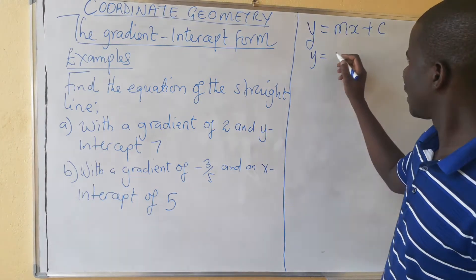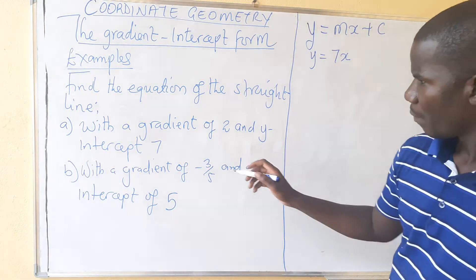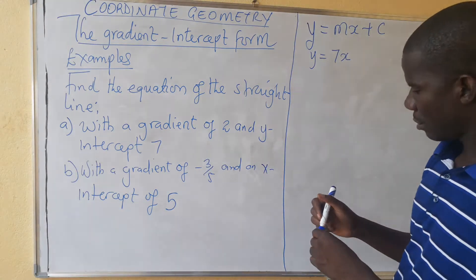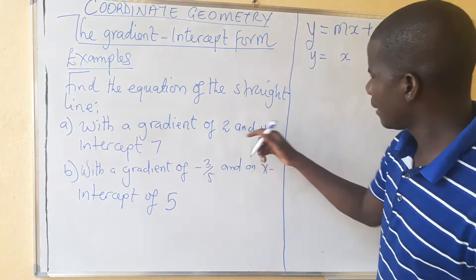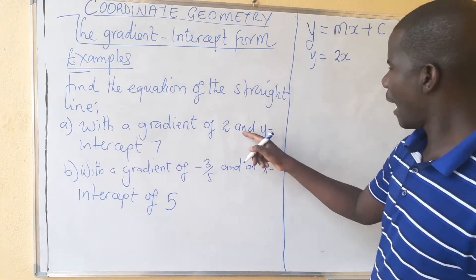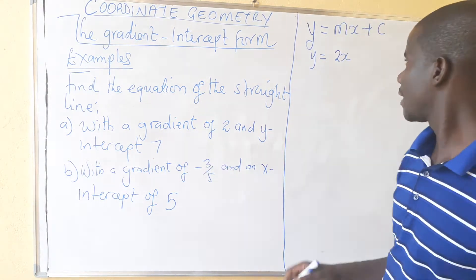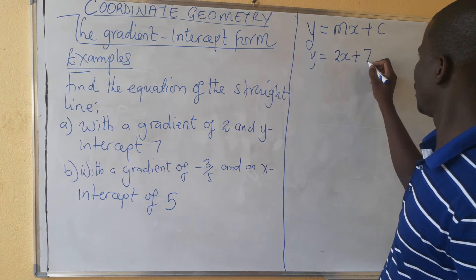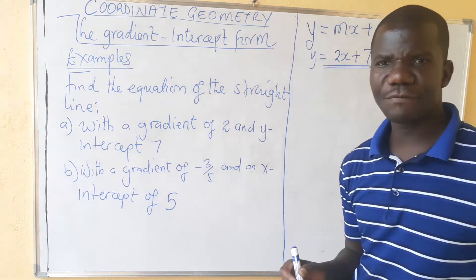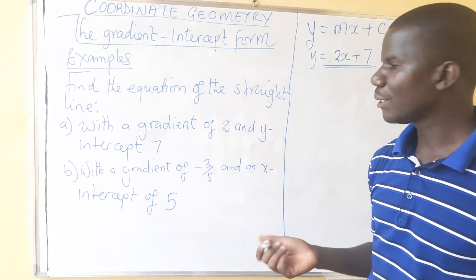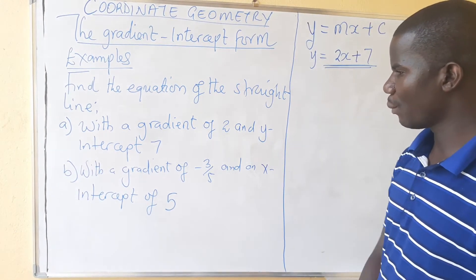For the first example, our gradient is 2 and our y-intercept is 7, which is positive. So the equation is going to be y = 2x + 7. That is our equation for the first one.